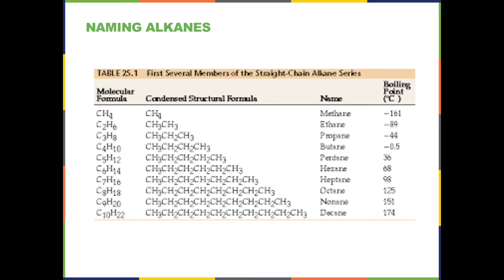After the first four, we use Greek prefixes followed by the ending -ane to represent the number of carbons. Five carbons is pentane — pent is Greek for five — six is hexane, seven is heptane, eight is octane, nine is nonane, and ten is decane. So after those first four unique names, the naming follows the Greek prefix system we've used in other naming conventions.